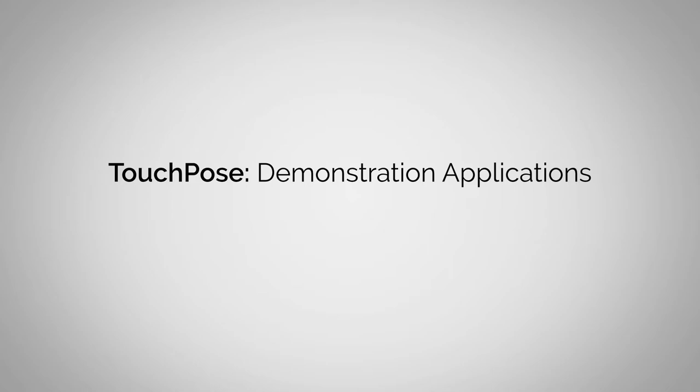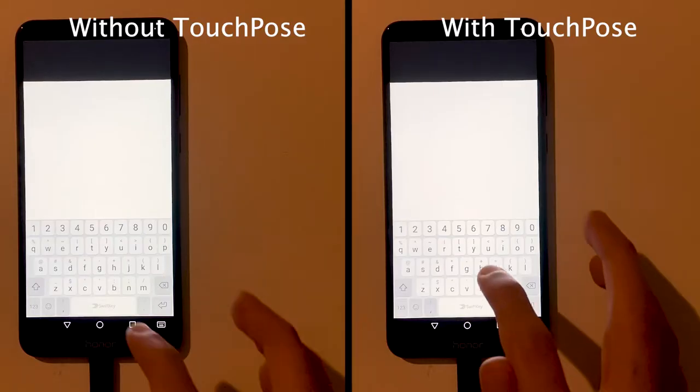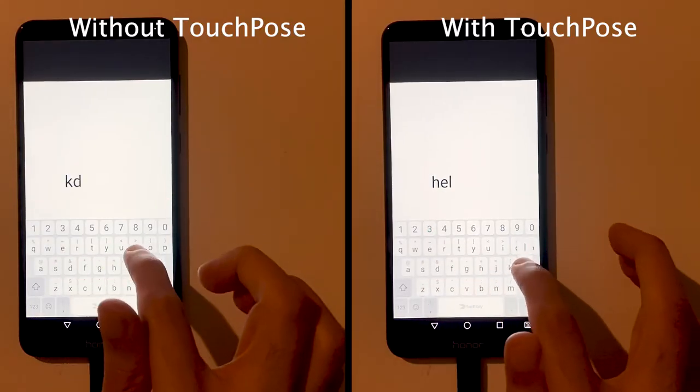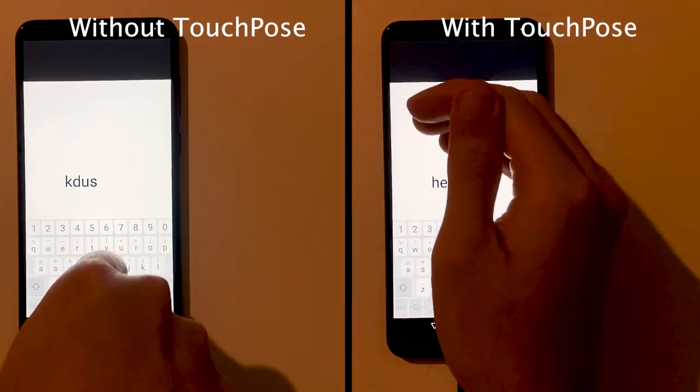TouchPose can enable a wide range of applications. Using the estimated full hand pose, it can distinguish between intentional and inadvertent touch events, as seen in this typing app.